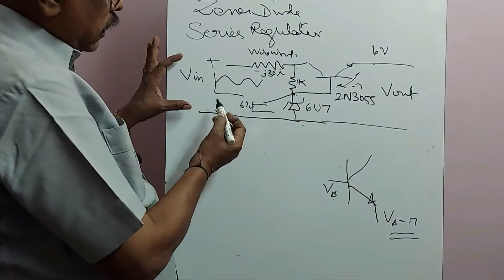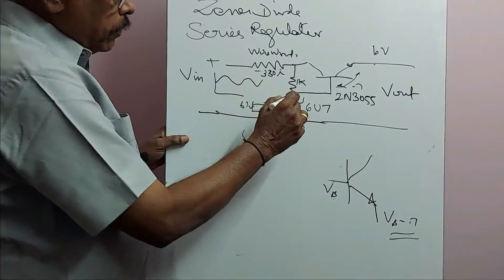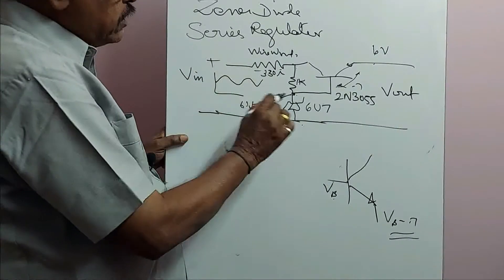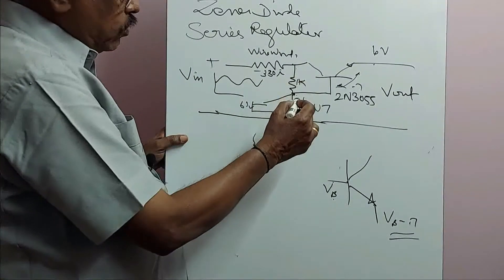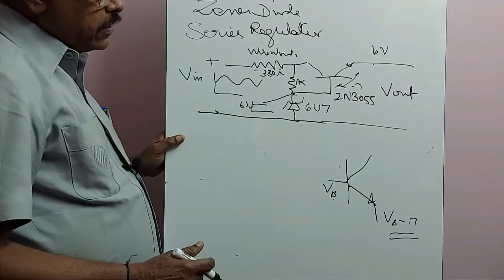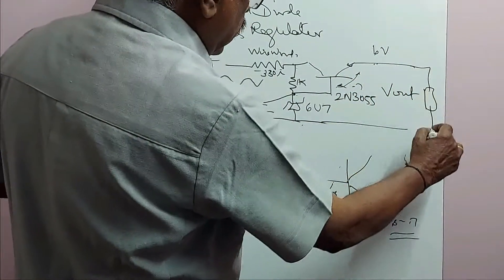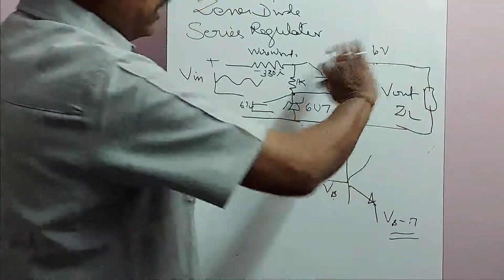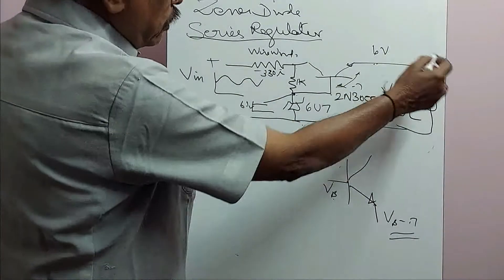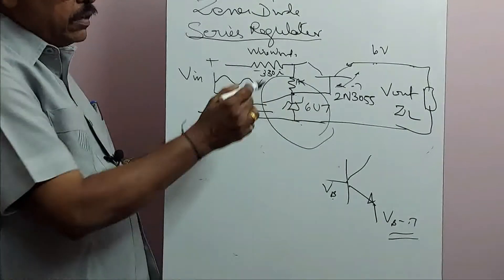Whatever change is occurring in the input voltage, the zener will always hold 6.7 volts — that will be constant. Any changes will be absorbed by the 1K resistor only, but 6.7 volts will always be available at the base. With a base-emitter voltage of 0.7V, 6 volts will normally be available at the output. You can connect a load ZL to that. This is a series regulator — the load is in series with the output, with a zener and resistor as the sensing element.